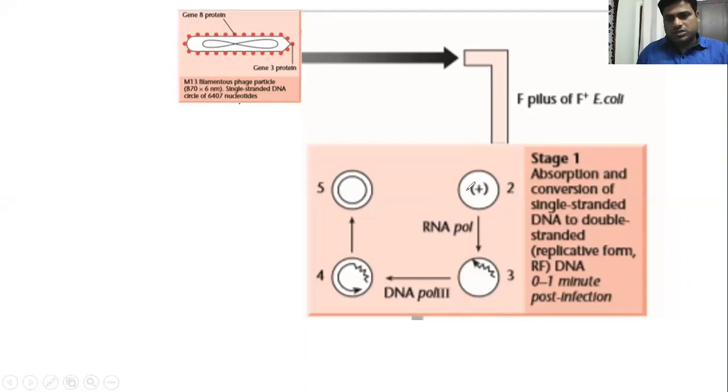In the next step, host machinery RNA polymerase produces RNA primer providing the free 3-prime hydroxyl group. Then the host machinery DNA polymerase utilizes this RNA primer providing the 3-prime hydroxyl to which DNA polymerase starts adding nucleotides one by one, forming the complete circular structure using the previous one as template.